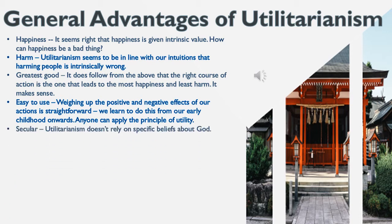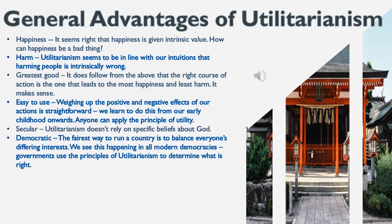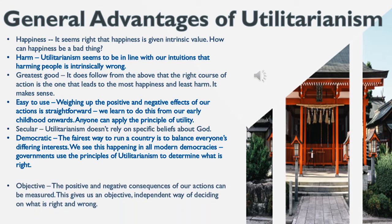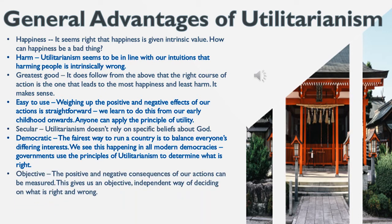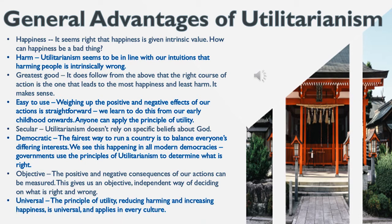Secular — utilitarianism doesn't rely on specific beliefs about God. Democratic — the fairest way to run a country is to balance everyone's differing interests. We see this happening in all modern democracies; governments use the principles of utilitarianism to determine what is right. Objective — the positive and negative consequences of our actions can be measured, giving us an objective, independent way of deciding on what is right and wrong. Universal — the principle of utility, reducing harm and increasing happiness, is universal and applies in every culture.